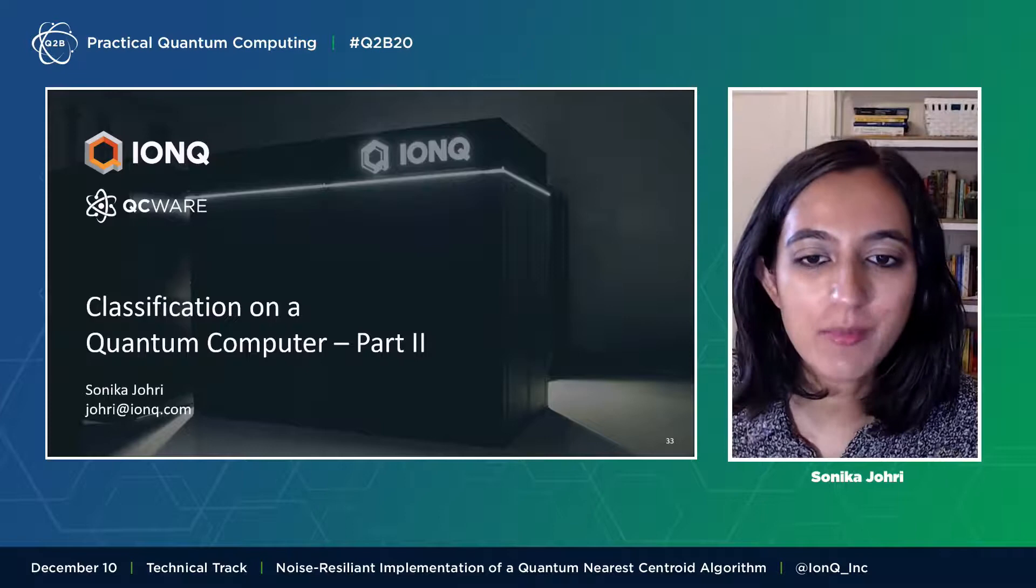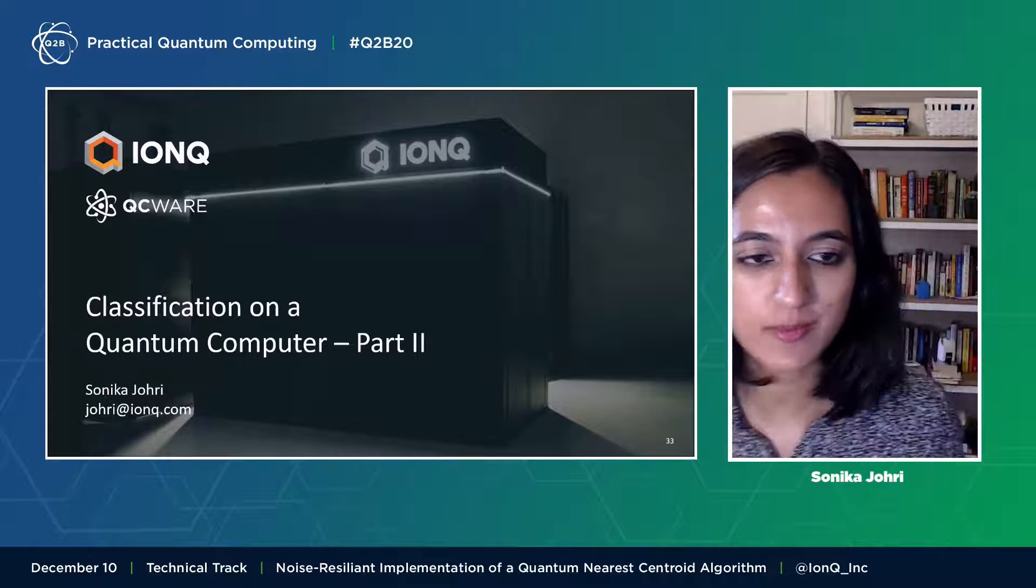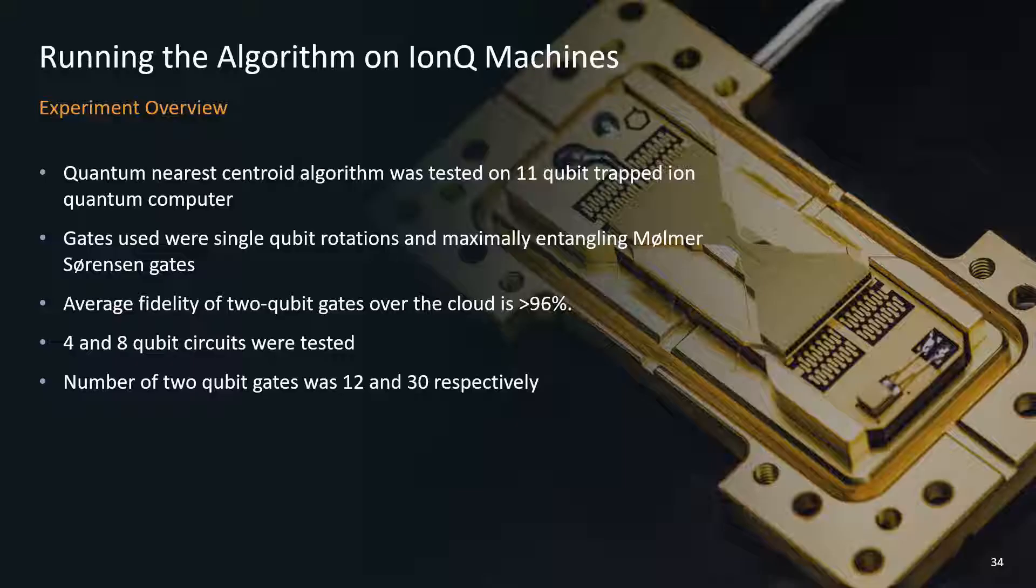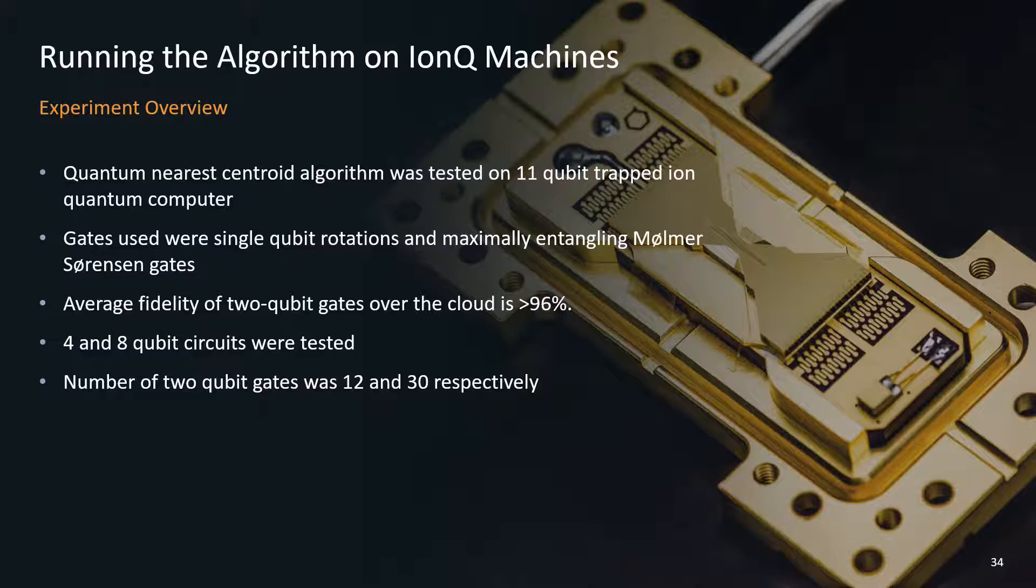Thanks a lot, Iordanis, for the great talk on the theoretical part of our project. Hello, everyone. My name is Sonika Jori and I'm a senior quantum applications researcher at IonQ. I will be talking about the experimental implementation of the quantum nearest centroid algorithm on IonQ quantum computers. First, some details on the nitty gritties of the experiment. Here we used our 11 qubit trapped ion quantum computer. The native gates on this system are single qubit rotations and maximally entangling Mølmer-Sørensen gates. The average two qubit gate fidelity accessible to typical cloud users is more than 96 percent. And we tested four and eight qubit versions of the algorithm which had 12 and 32 two-qubit gates respectively.